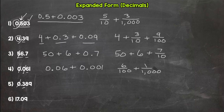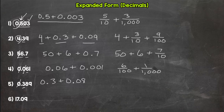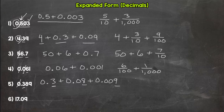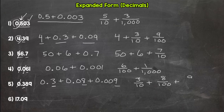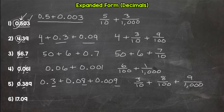Number five: no wholes, so we start with a three in the tenths place. Then we have eight hundredths, and nine thousandths. Fraction form: three tenths plus eight hundredths plus nine thousandths. Notice it's 'ths' — thousandths, hundredths, tenths — not just thousands.